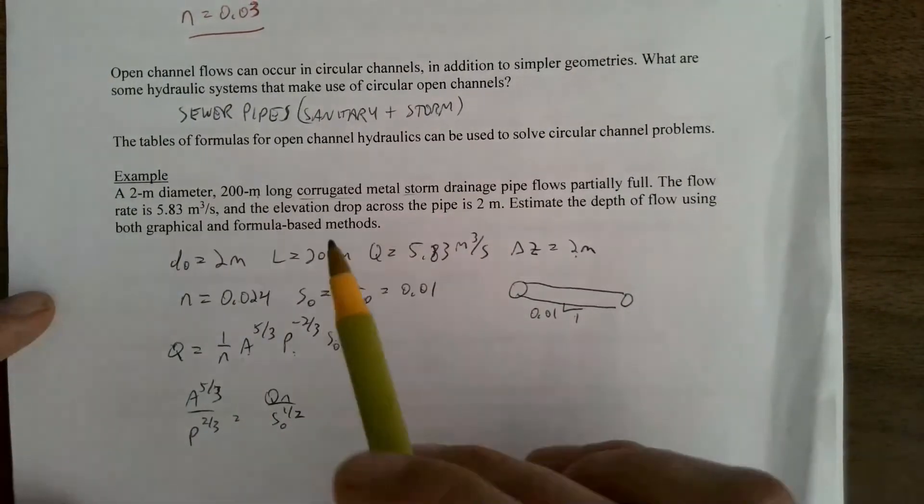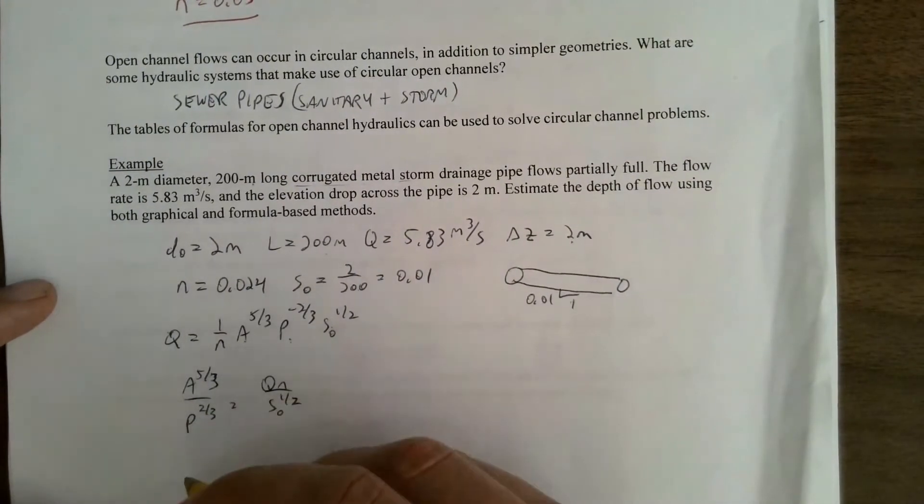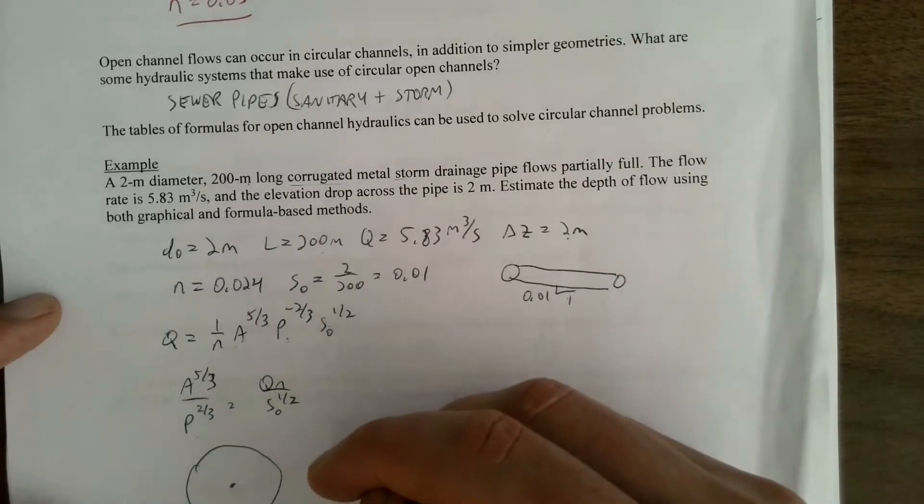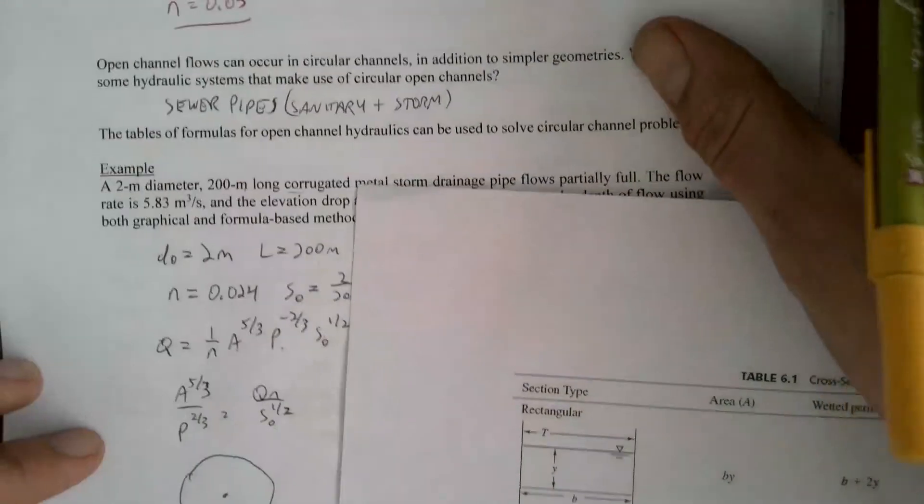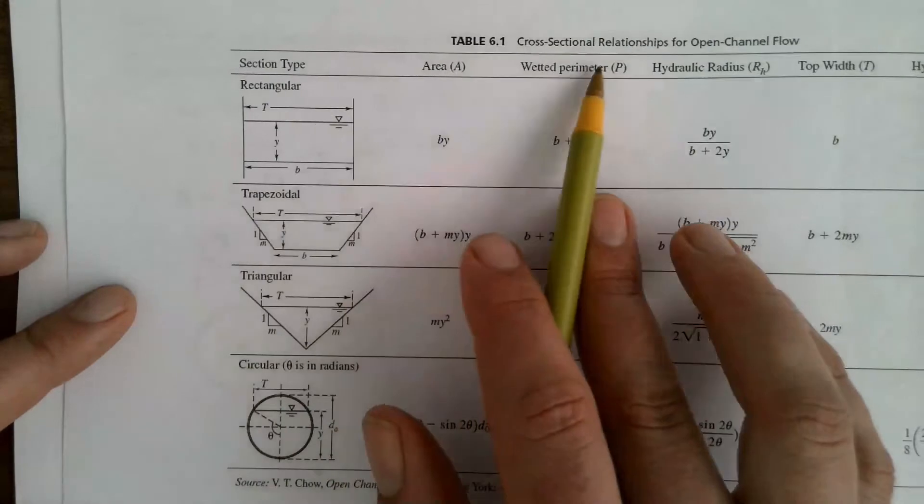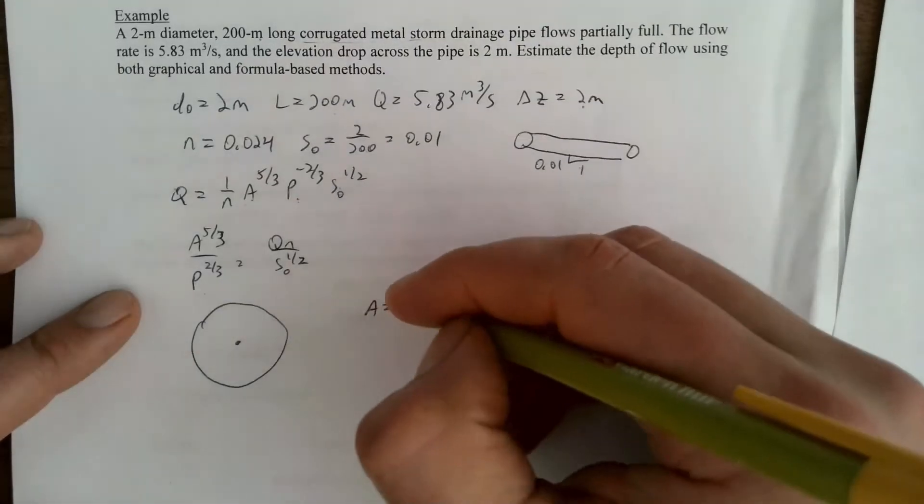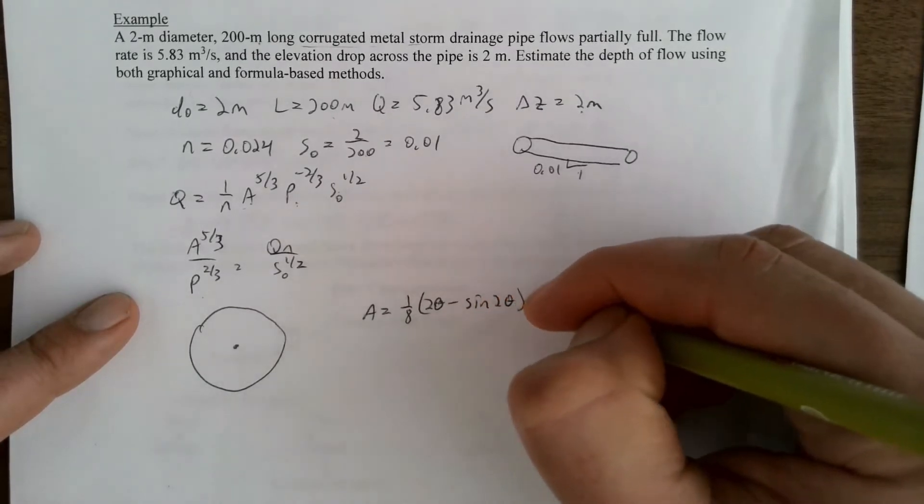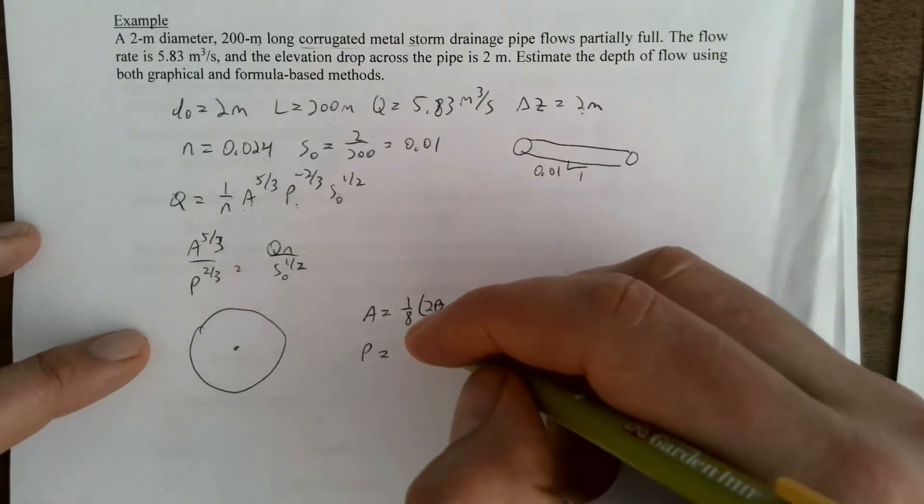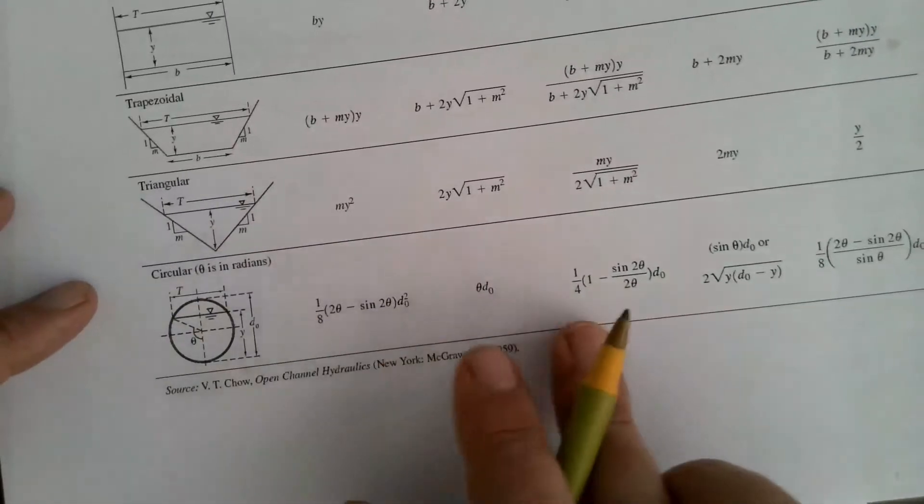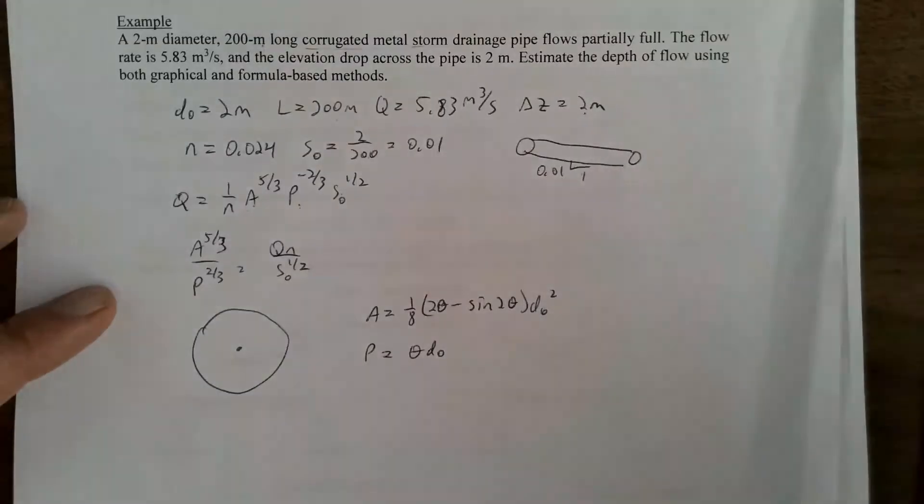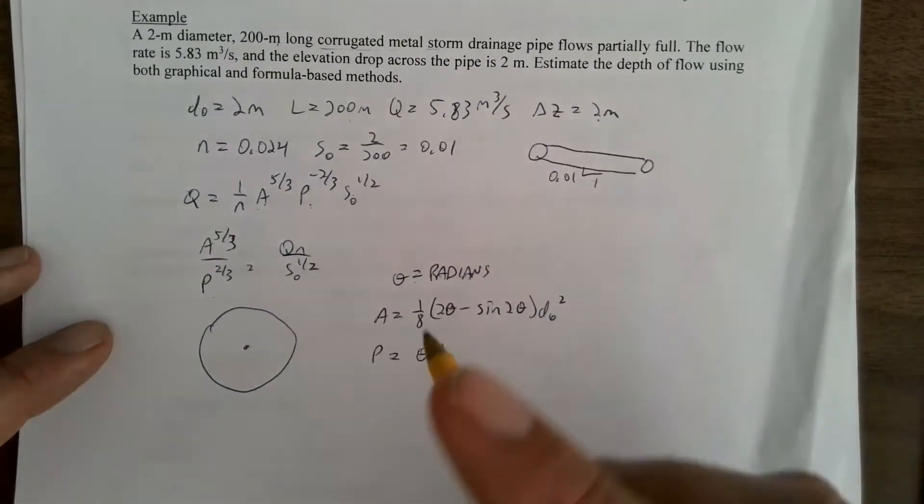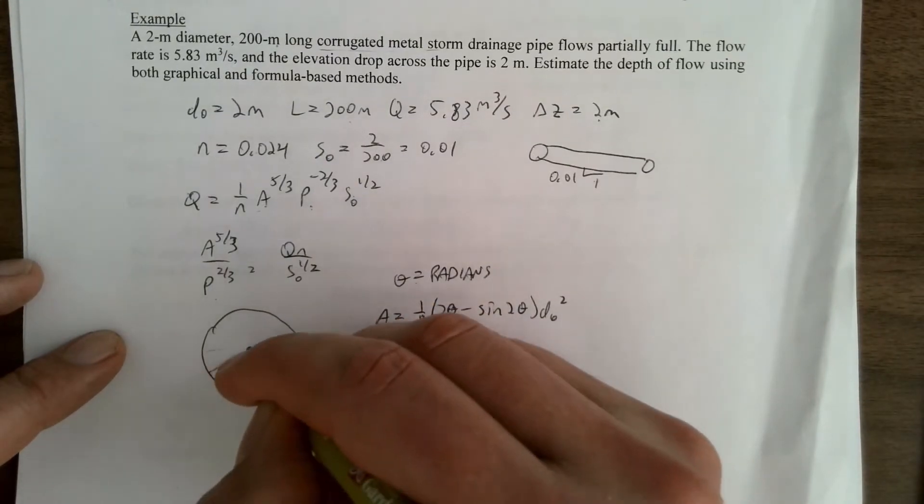What I want is the depth of flow, which is Y. And so, to do this, I've got to work with my circular cross section. The area here we're told is for the circular case. I can look this up: area and perimeter. One-eighth times two-theta minus sine two-theta times D0 squared. And the perimeter is theta times D0. So, my formula is here. Note that theta is in radians, not in degrees.